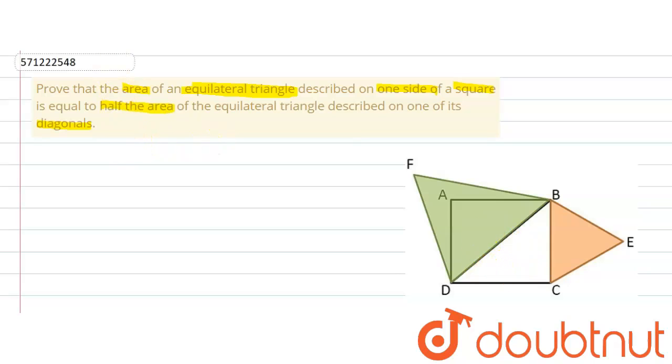So we are required to prove that area BCE is equal to half of area BDF.